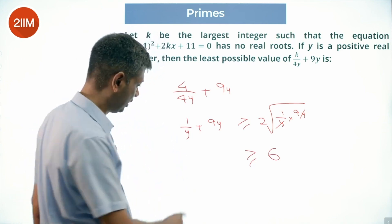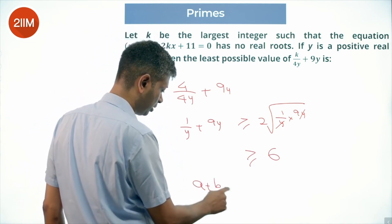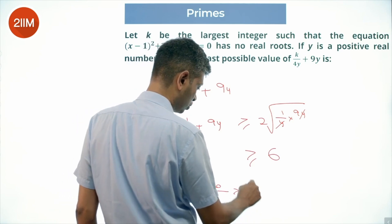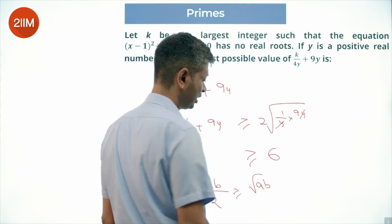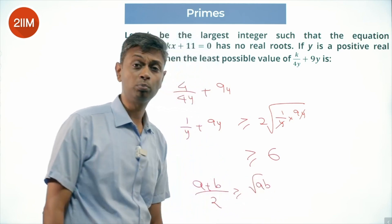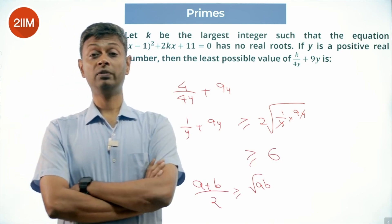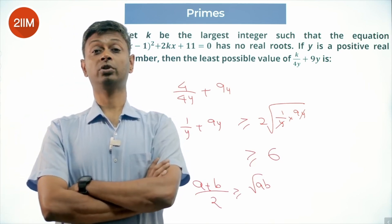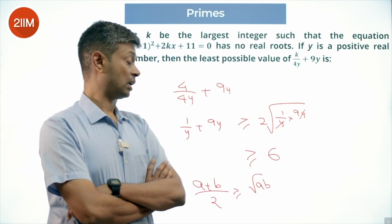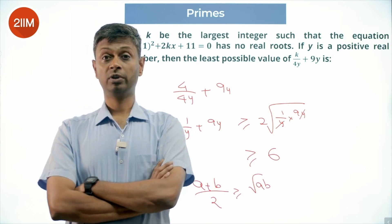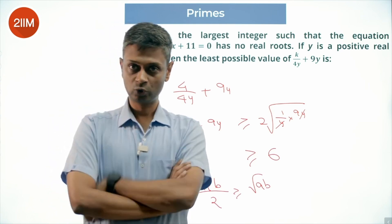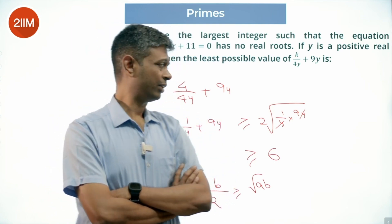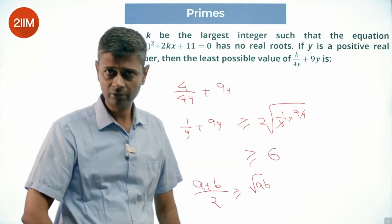We used the idea that (a plus b) divided by 2 is greater than or equal to the square root of ab. The arithmetic mean of 2 positive real numbers is always greater than or equal to the geometric mean of 2 positive real numbers, as long as both are positive and real. So AM is greater than or equal to GM, and plugging that idea in gives us 6.